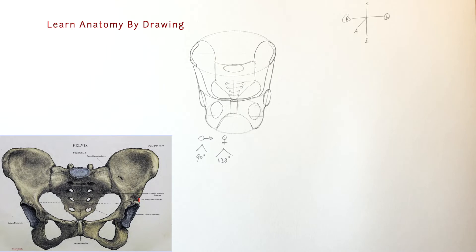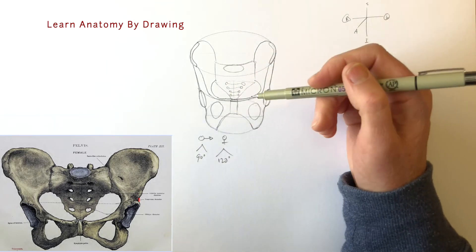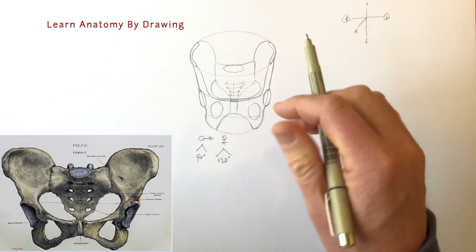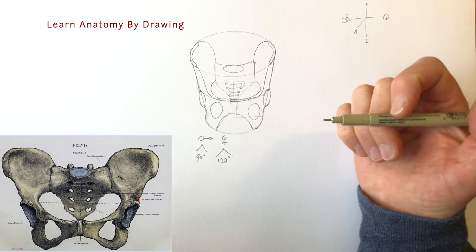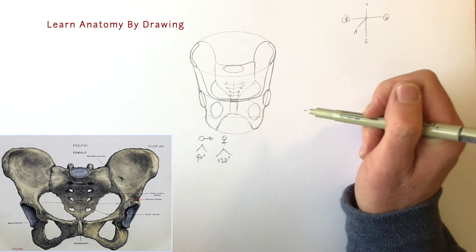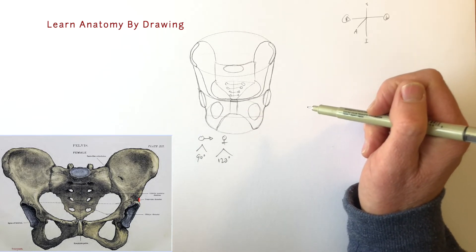There we have a basic pelvis. Now I'm going to ink that in and I encourage you to do so as well. Any kind of pen will do but pencil smudges, and if you want to keep these drawings for your studies then I recommend you ink it in. After we've inked it we will come back and label it.